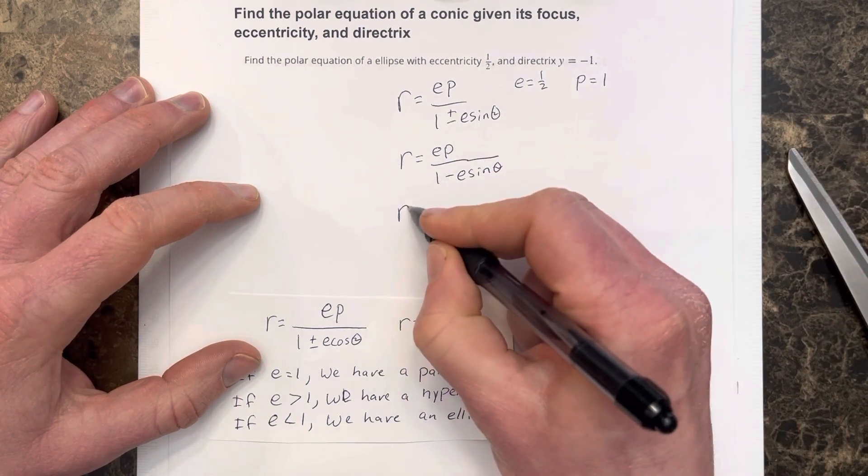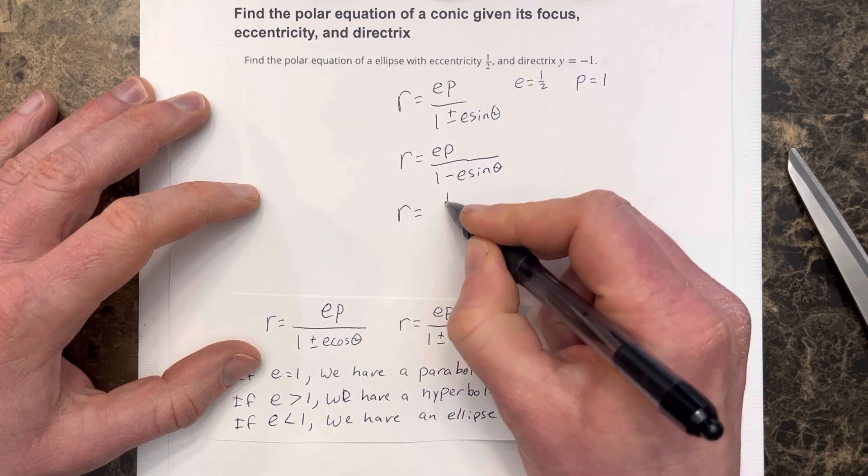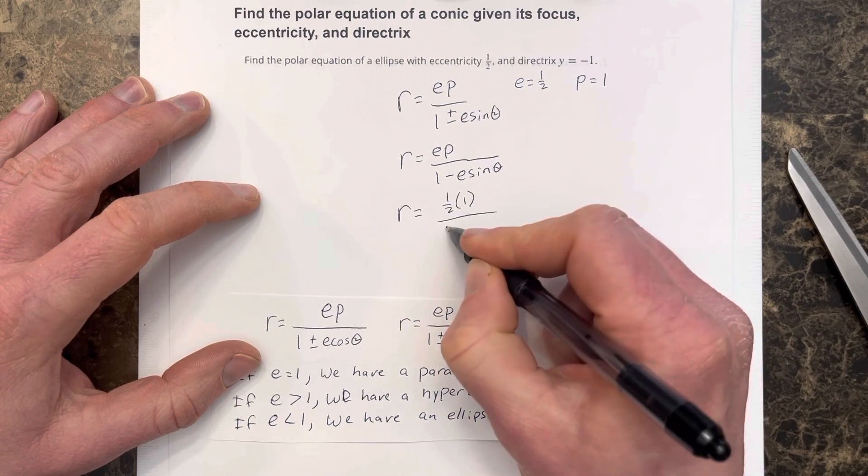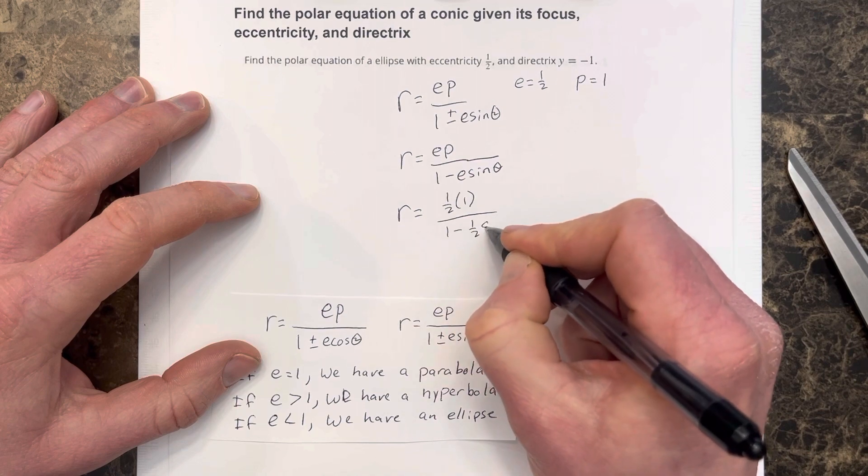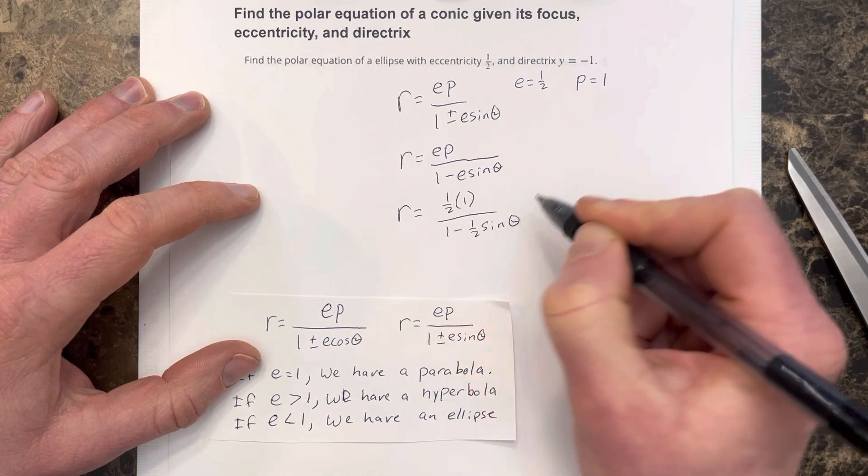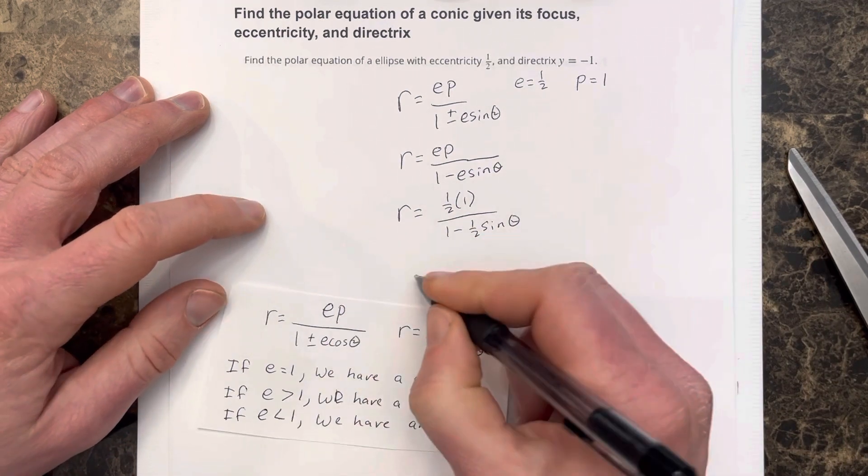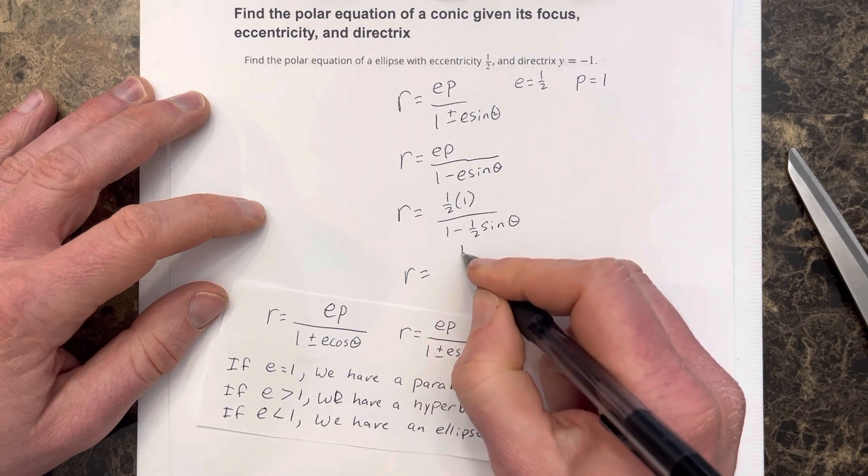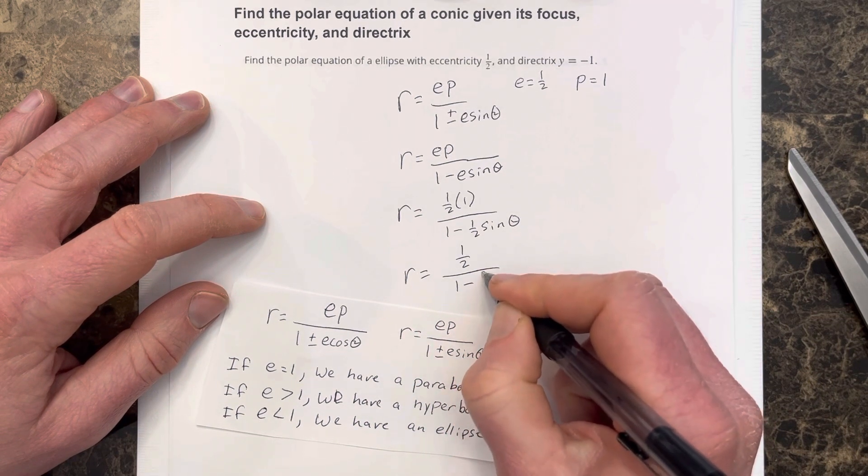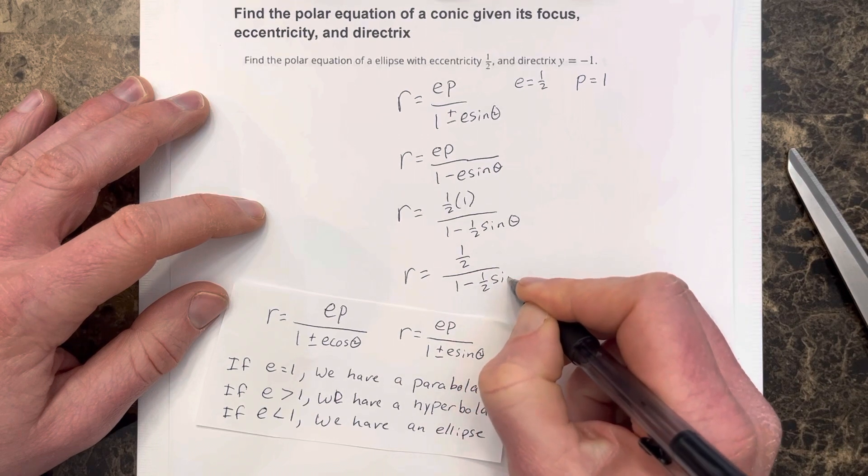We can start substituting. r equals one half times one for p over one minus one half sine theta. So our equation ends up being r equals one half over one minus one half sine theta.